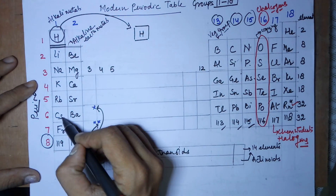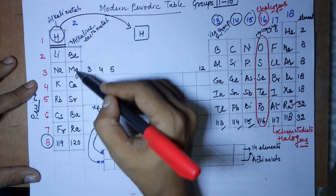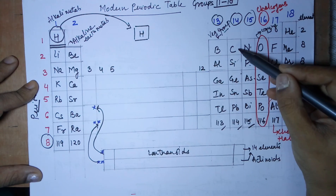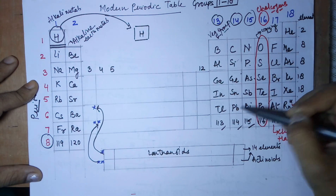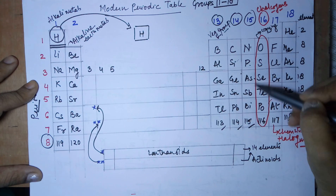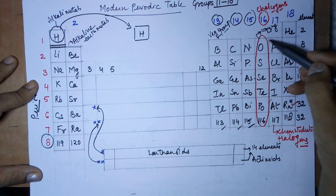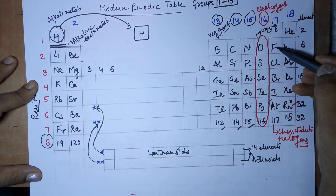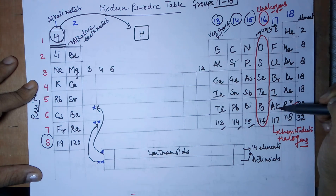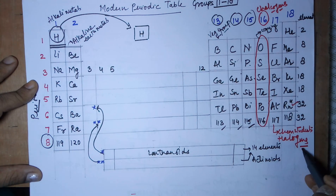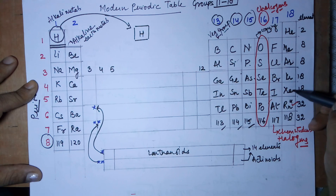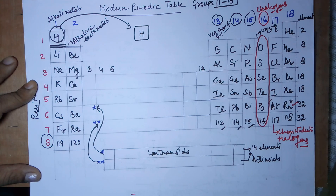Quick recap of all mnemonics: Group 1 — 'Leena ki rabadi sasti aur free.' Group 2 — 'Beta maange car scooter baap razi.' Group 13 — 'Baingan aloo gajar in thalla.' Group 14 — 'Class se gay snooker pub.' Group 15 — 'Nana patakar asalme sabka bhai hai.' Group 16 — 'Us se depo' — the chalcogen, anti-disciplinary group. Group 17 — 'Full color brightness in atom' — the halogens. Group 18 — 'Heena Neena aur Kareena ka X-ray rangin.'